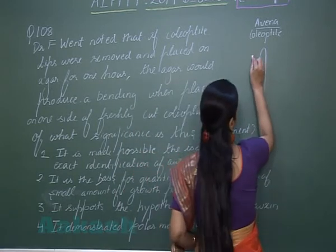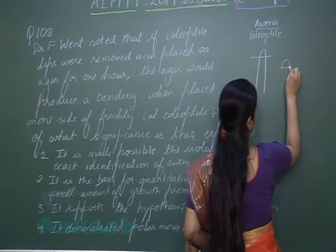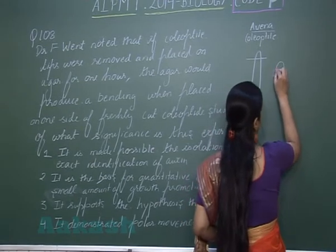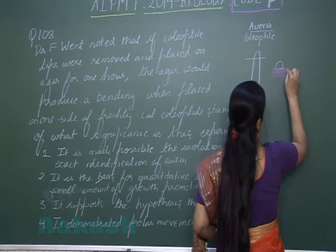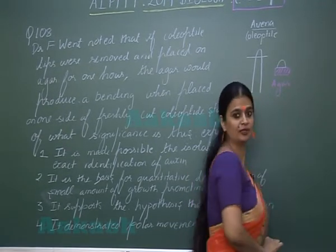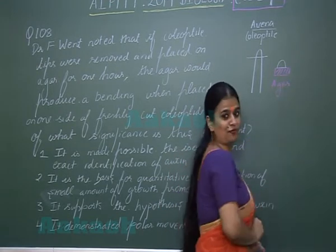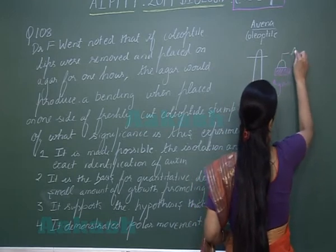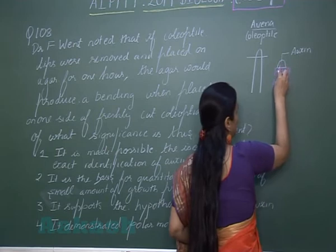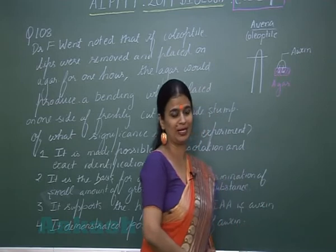He removed the tip of Coleoptile. The tip was removed and placed over an agar block. In the tip there is presence of a hormone — that hormone is auxin. Auxin shows movement and it was collected in the agar block by Wendt.